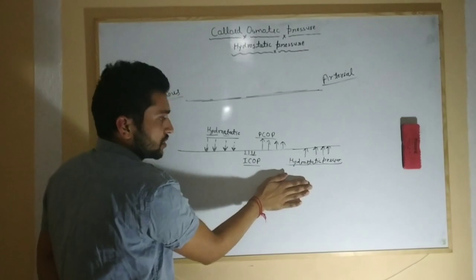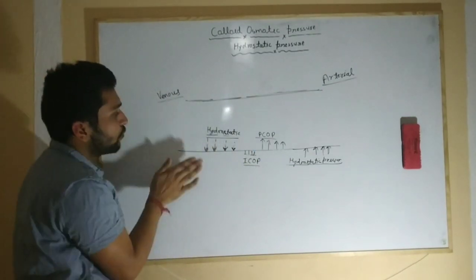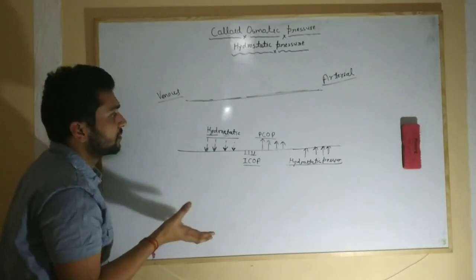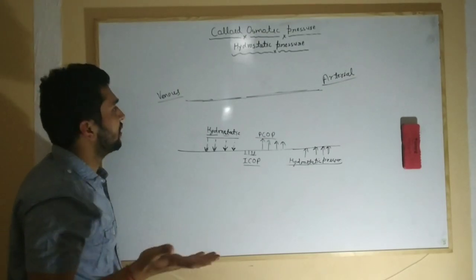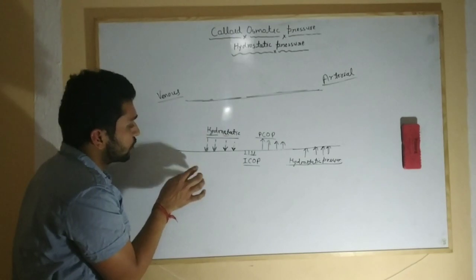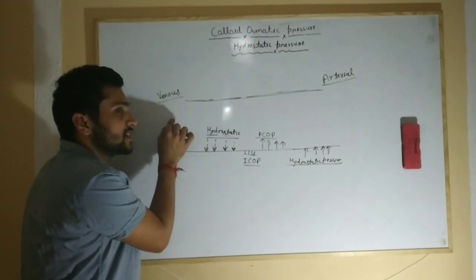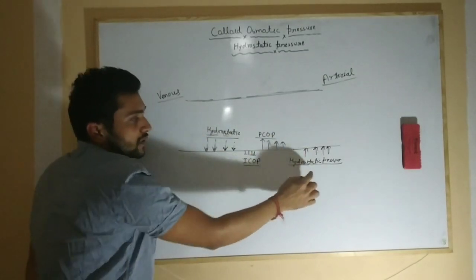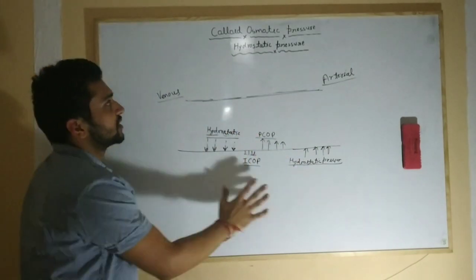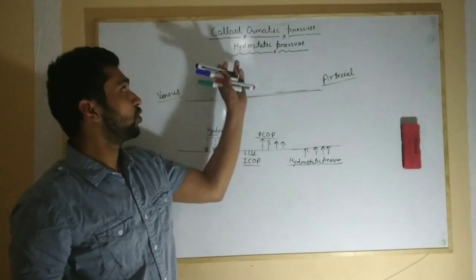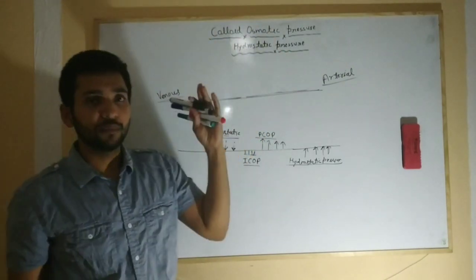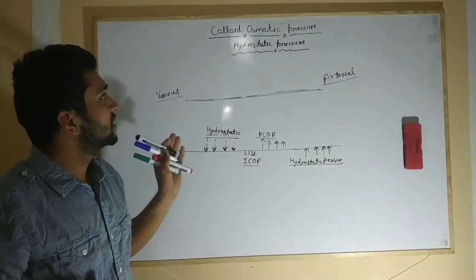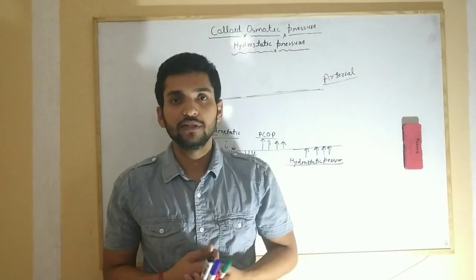At the venous end, waste products such as urea move from the interstitial fluid back into the venous end. Here, plasma colloid osmotic pressure and interstitial hydrostatic pressure work together to return fluid to the circulation. Colloid osmotic pressure is also called oncotic pressure, and it is derived from proteins such as albumin. That covers the pressures — thank you for your support.